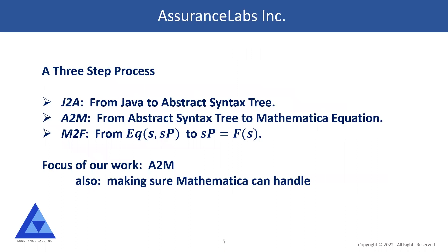We proceed in three steps. First, we go from source code — in this case Java, but it could be any C-like language — into an abstract syntax tree using common parsers. Then we transform the abstract syntax tree into a mathematical equation involving the input and output, or initial state and final state. From there, whatever Mathematica can do, we can do. The third step is to go from the mathematical equation to the program function — we generate an equation of the form eq(initial state, final state), and Mathematica transforms that into a functional form: sp = f(s).